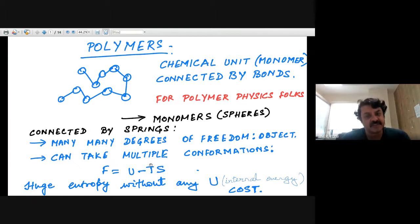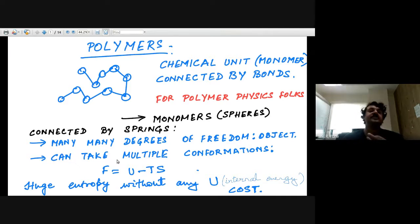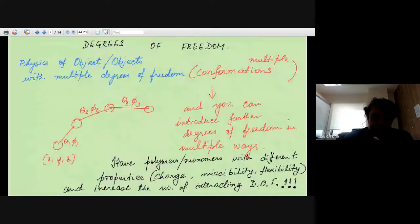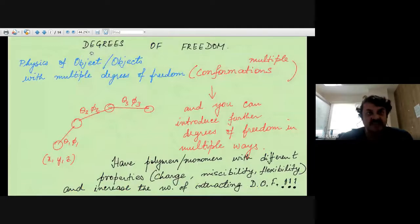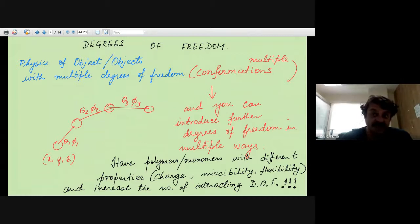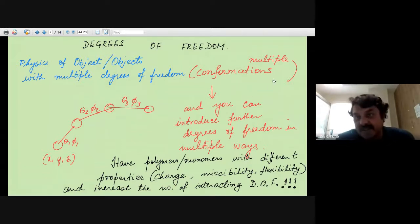There is a huge entropic term without any internal energy cost. Basically you are studying the properties of an object with multiple degrees of freedom. A single polymer chain is the physics of objects with multiple degrees of freedom, because these monomers can take various positions in space subject to the constraint of bonds, thereby taking multiple conformations.